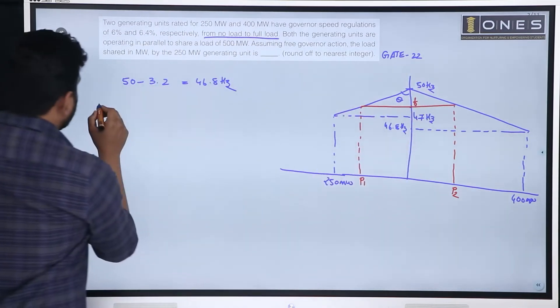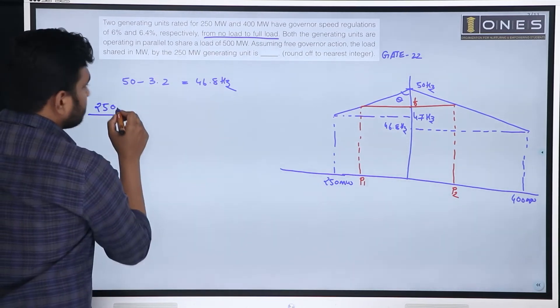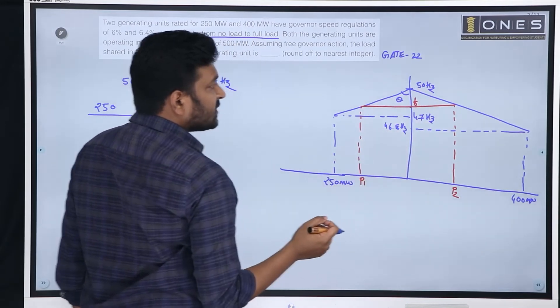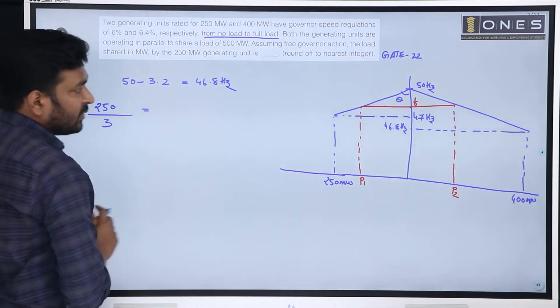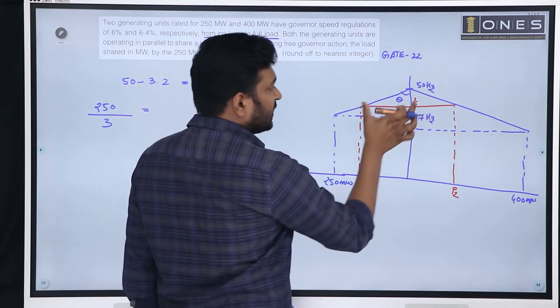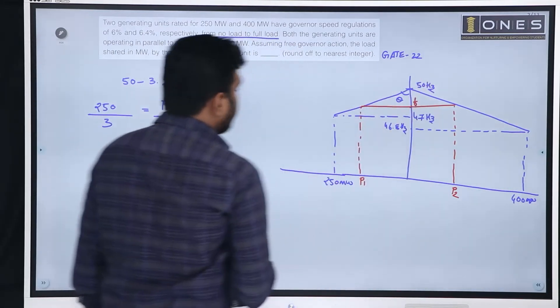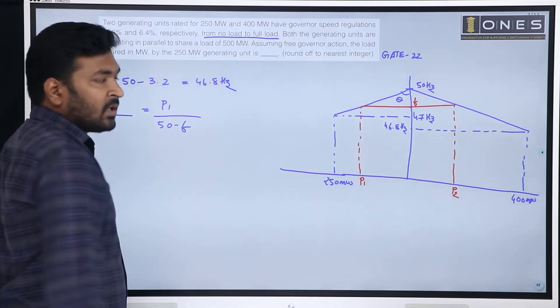Opposite is 250 megawatt. So, 250 megawatt divided by 50 minus 47, which is 3 hertz. This is equal to the triangle opposite by adjacent, which is P1 divided by 50 minus F.